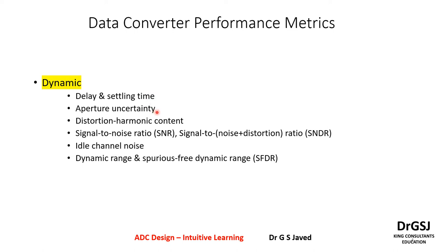Aperture uncertainty refers to the input dynamic range that the system can handle at the input of the ADC. This is basically analogous to the aperture of a camera, which determines the amount of input light that can enter. Here, it is the effective voltage range that can enter into the ADC input.